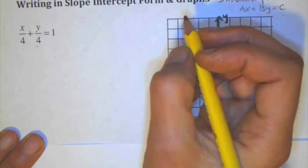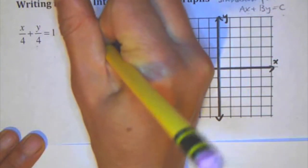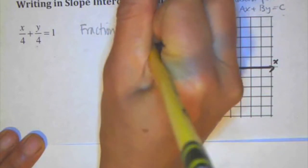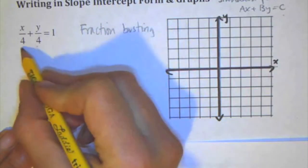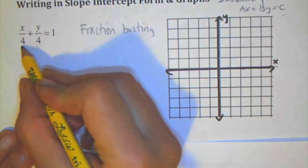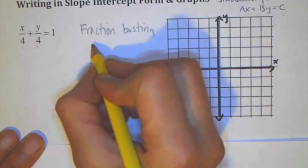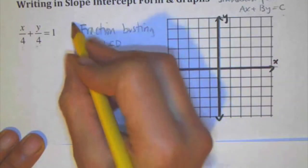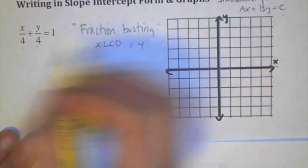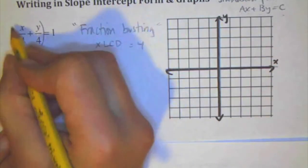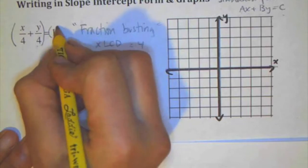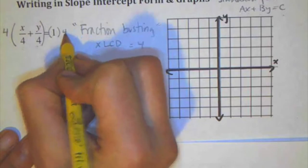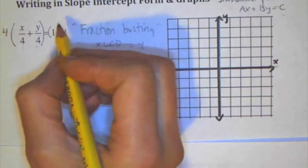So we're going to do a move that's called fraction busting. The way that you do fraction busting is you find the LCD, the least common denominator. In this case the only denominator is four, and you multiply everything by the least common denominator. When you're solving equations, you always multiply each side. So you're going to multiply everything on this side by the denominator and everything on this side by the denominator.